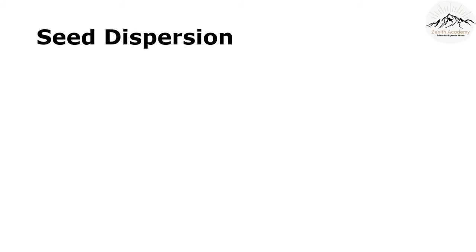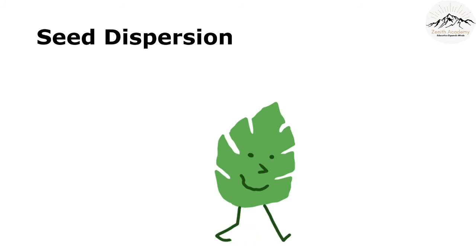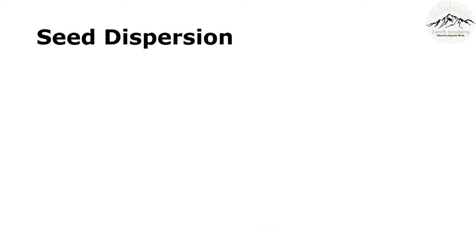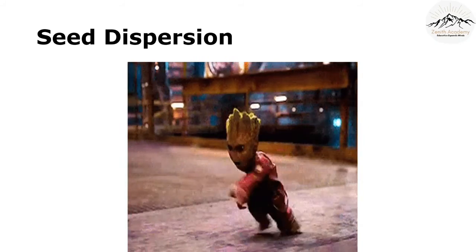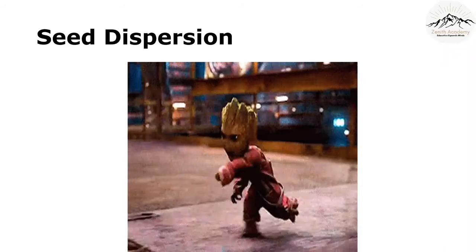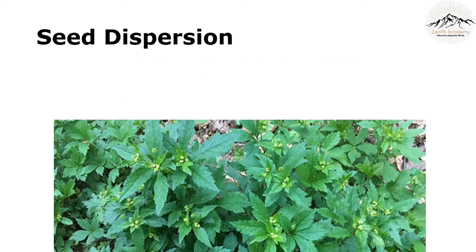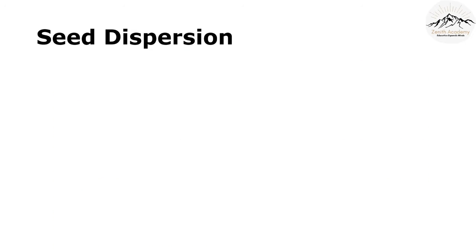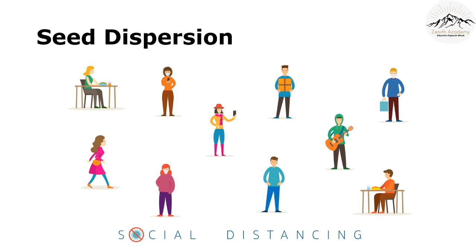Have you ever seen a plant move from its place and go somewhere else on its own? If there is crowding of plants and they germinate too close to one another, they will not get enough nutrients and none of them will be healthy. Humans are late to find out about social distancing — plants have been familiar with it all along.